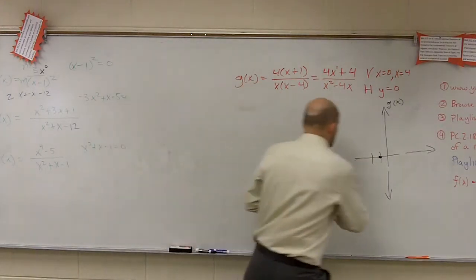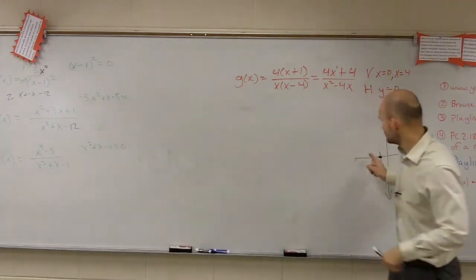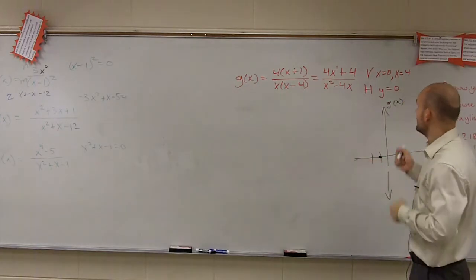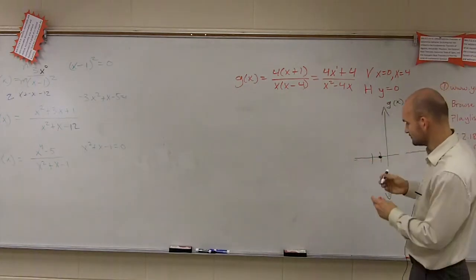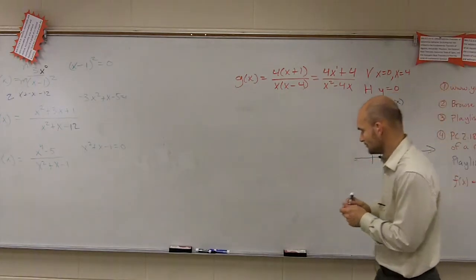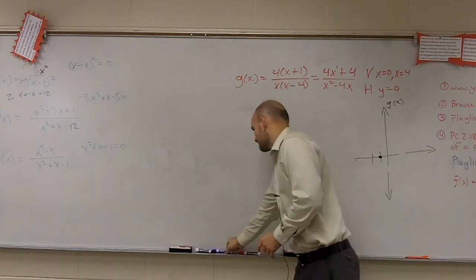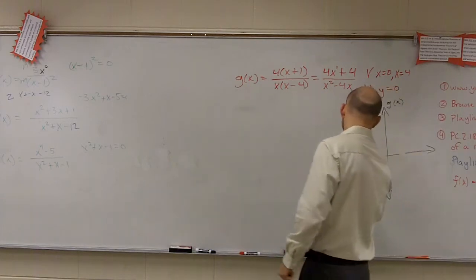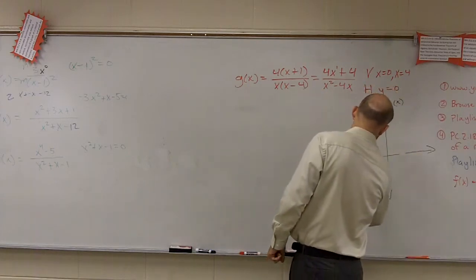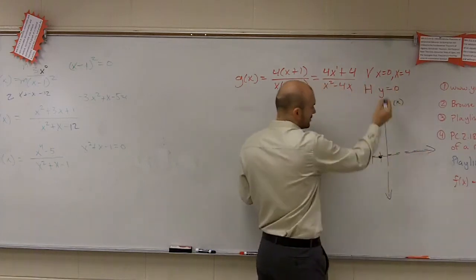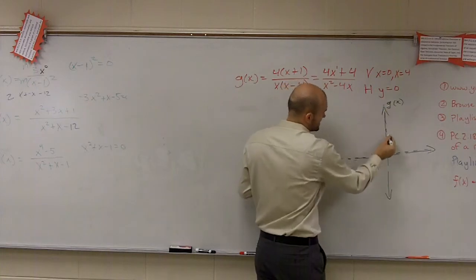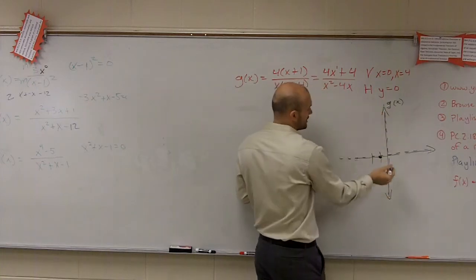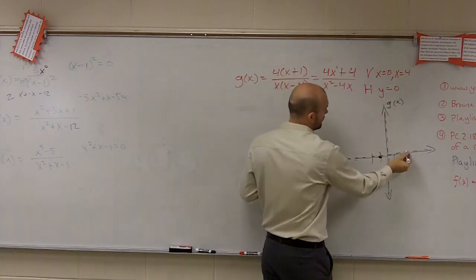We found the x-intercept was at negative 1. Then we determined we have a horizontal asymptote at y equals 0. We have a vertical asymptote at x equals 0, and we have a vertical asymptote at x equals 4.